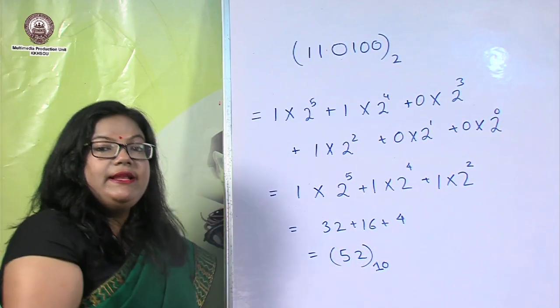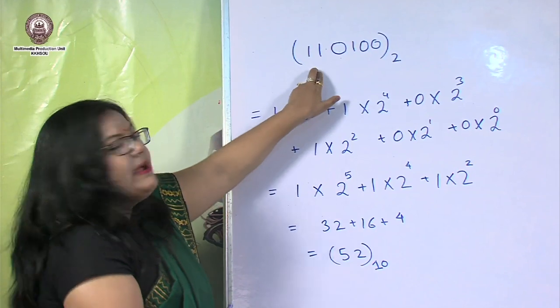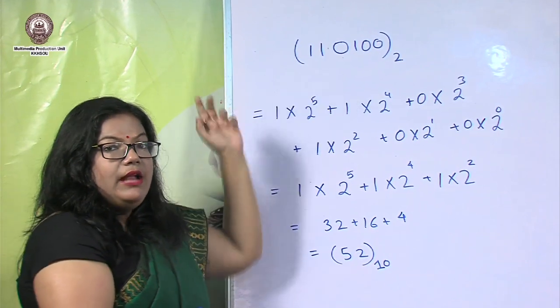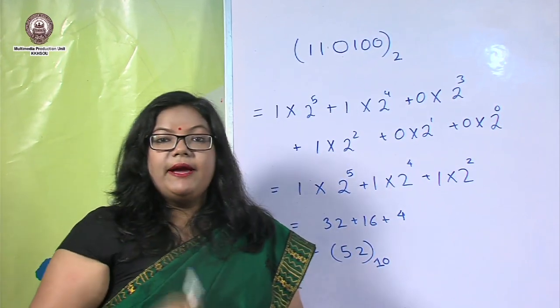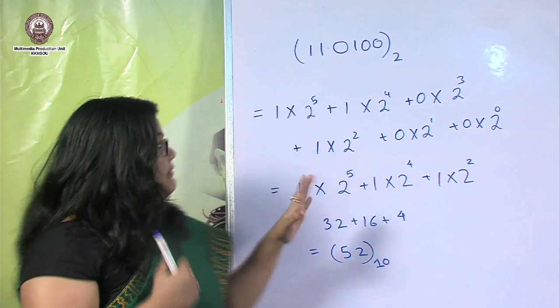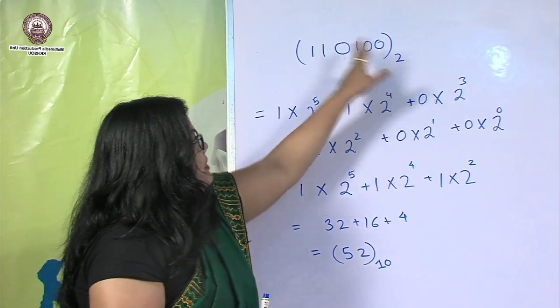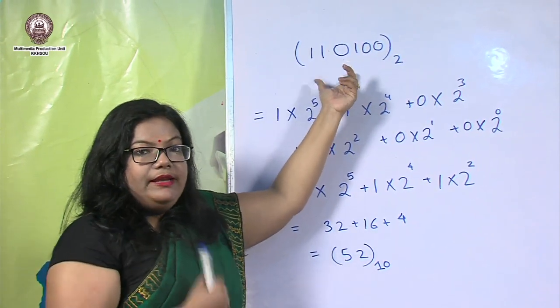So 52 is the decimal equivalent of this binary number. Next, let us look at binary to decimal conversion again, but with a fractional part — that is, a number with a decimal point.